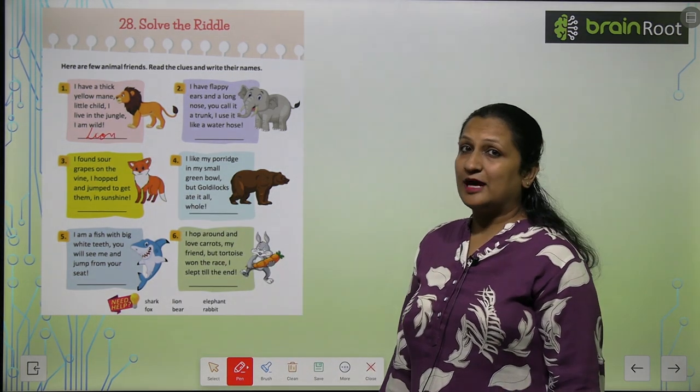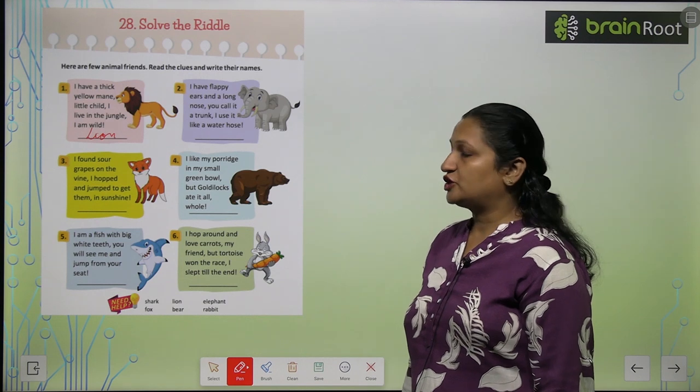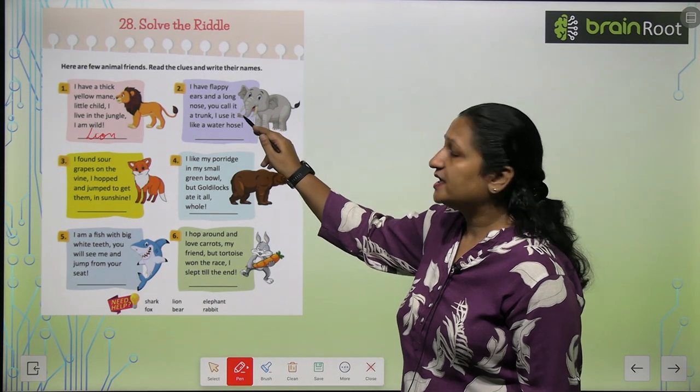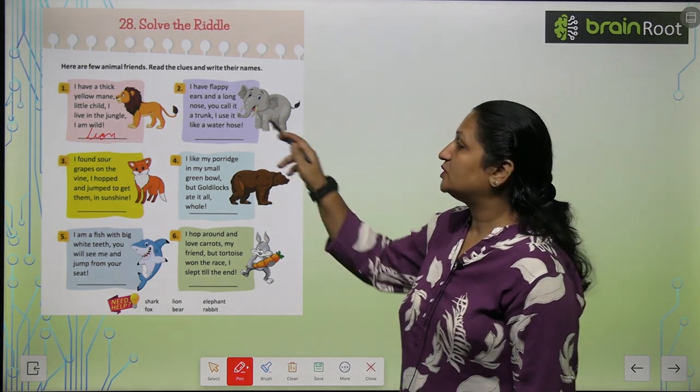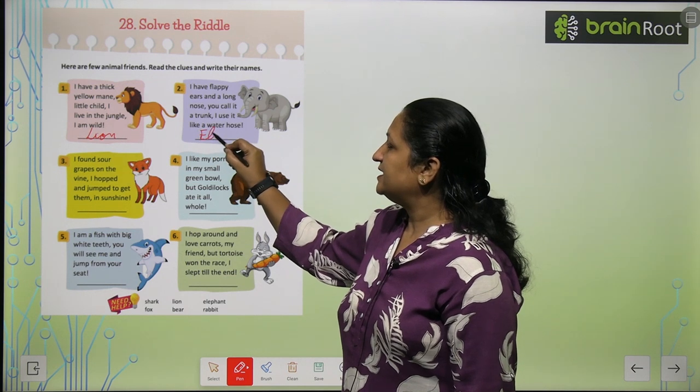I have flappy ears and long nose. You call it a trunk. I use it like a water hose. Toh kis ki ye trunk hoti hai? Kis ki lumbi si nose hoti hai? Ye hoti hai elephant ki. So you will write elephant.